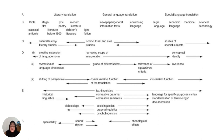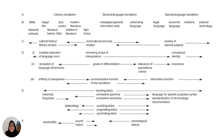Level F, the lowest order level, deals with phonological aspects such as alliteration, rhythm, and speakability of stage translation and film dubbing.